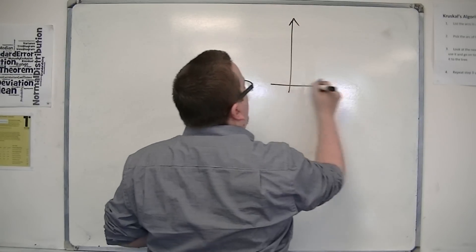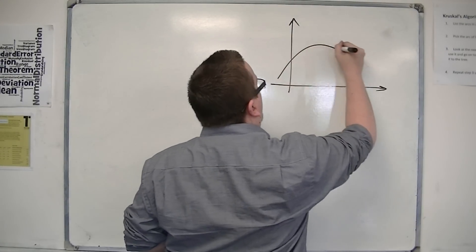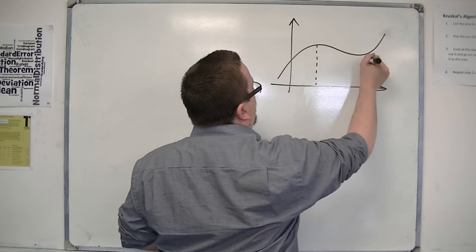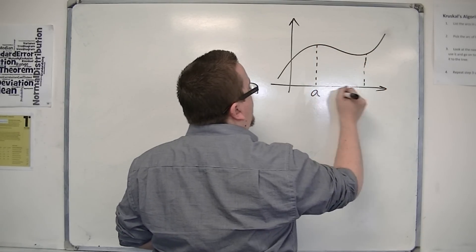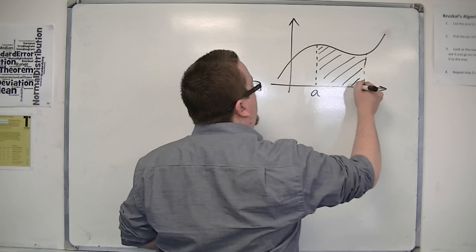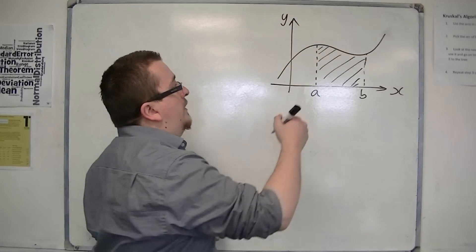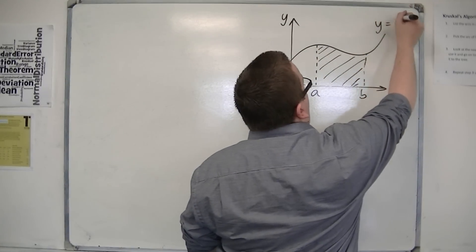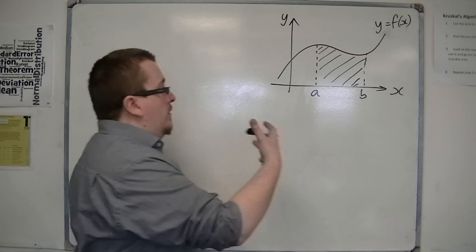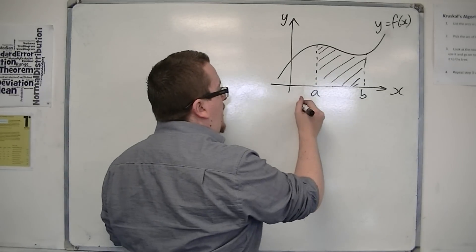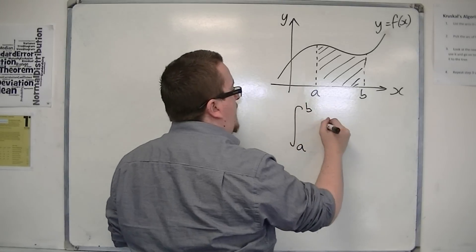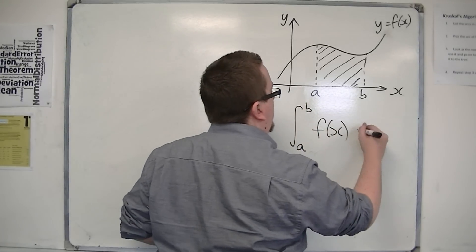So if I have a curve that looks something like this, for example, and I want to find the exact area between two values, a and b, between the curve and the x-axis — let's say this is y equals f of x — then the shaded area is equal to the integral between a and b of f of x dx.